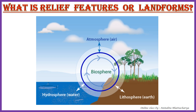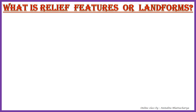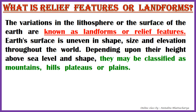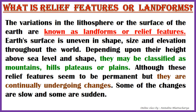The fourth realm, called the biosphere, is found in the narrow zone where the three realms come in contact with one another. So what is the meaning of relief features or landforms? The variations in the lithosphere, or the surface of the earth, are known as landforms or relief features. Earth's surface is uneven in shape, size, and elevation throughout the world, and depending upon their height above sea level and shape, they may be classified as mountains, hills, plateaus, or plains.